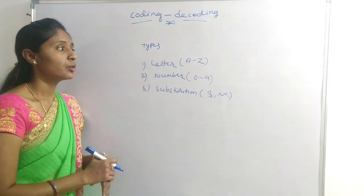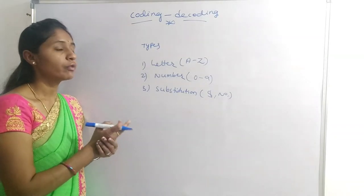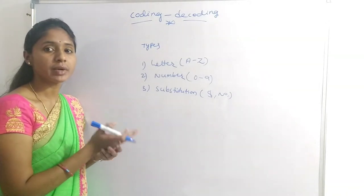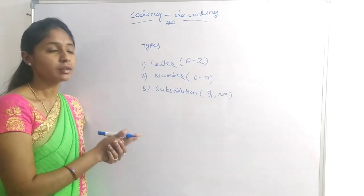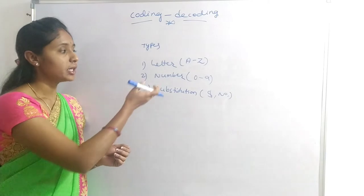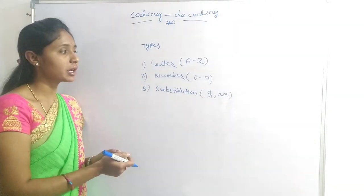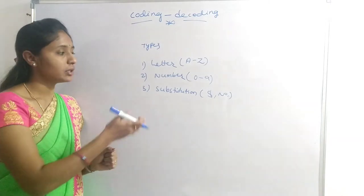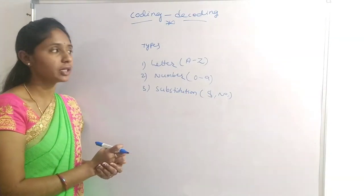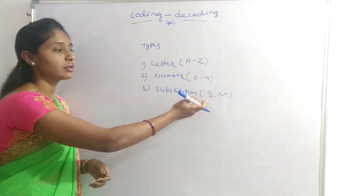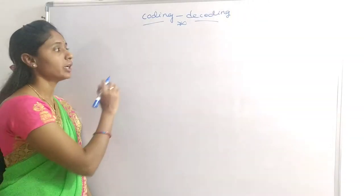Coming to letter coding — in this type of question, alphabets are replaced by other alphabets according to a given code. In number coding, numbers are replaced by certain numbers according to the given code. In substitutional coding, there is a combination of letters, numbers, and symbols.